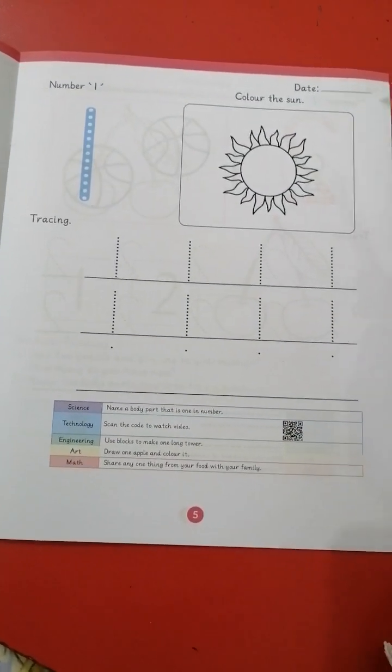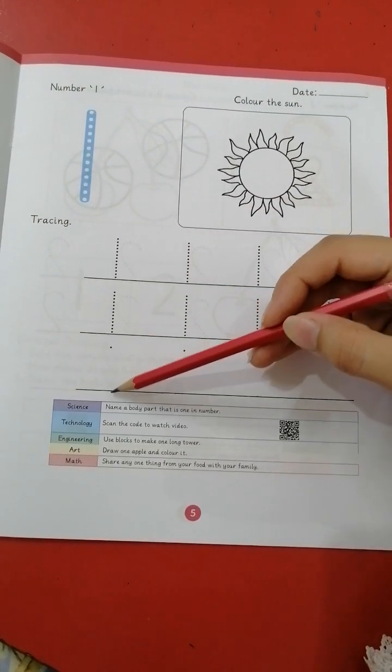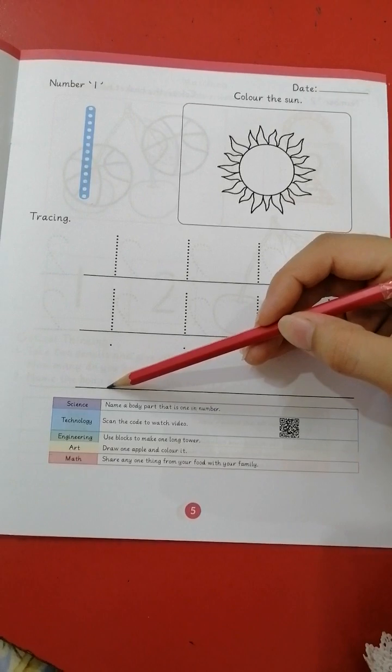Next we have number one. How many suns we have? One. You have to trace it over here and write independently. Trace it. One straight line makes one.